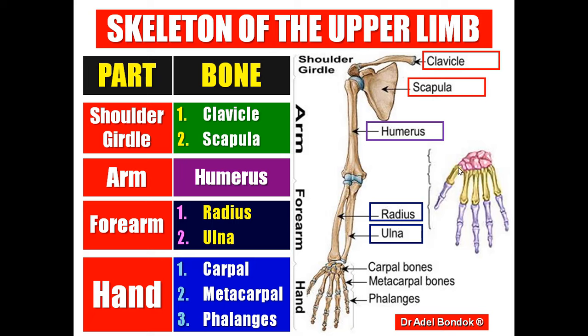The metacarpal bones are five, one for each finger. Then the phalanges — three for each finger except the thumb, which has only two.